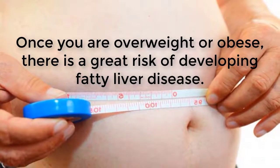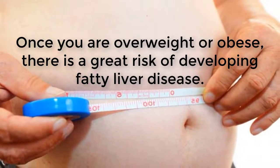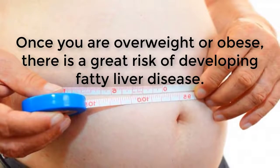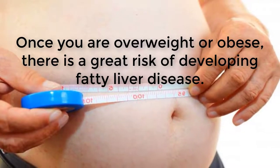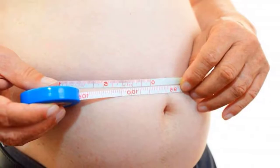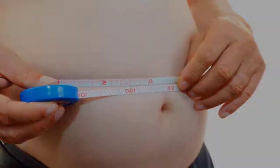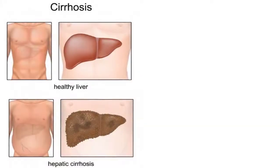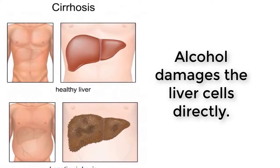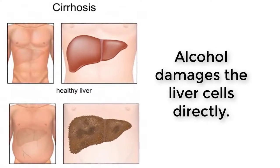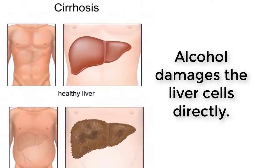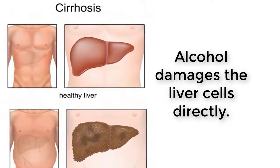The high amounts of calories in alcohol can pack on the pounds. Once you are overweight or obese, there is a great risk of developing fatty liver disease. Alcohol also damages the liver cells directly — it causes oxidative stress and generates free radicals that attack the liver directly. Free radicals are clearly related to fatty liver disease.